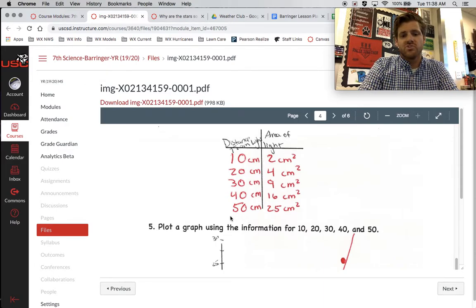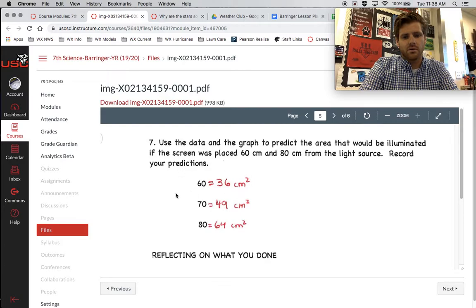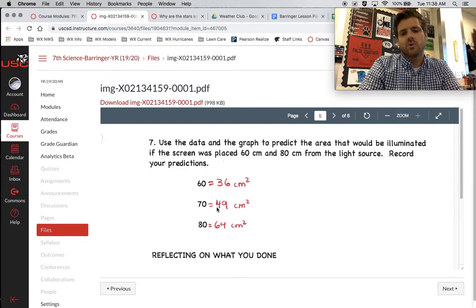So if I were to give you 60 centimeters distance from light, the answer that would go here would be 36. And we see that right here. This is an old lab, so don't worry about this one. You're not going to need to know this one. But if I had 60, it would be 36 because 6 squared is 36. 70, 7 squared would be 49. 80, 8 squared is 64. So you can see the pattern there.